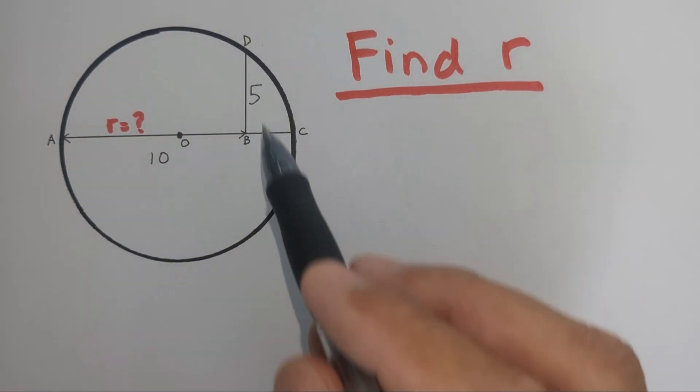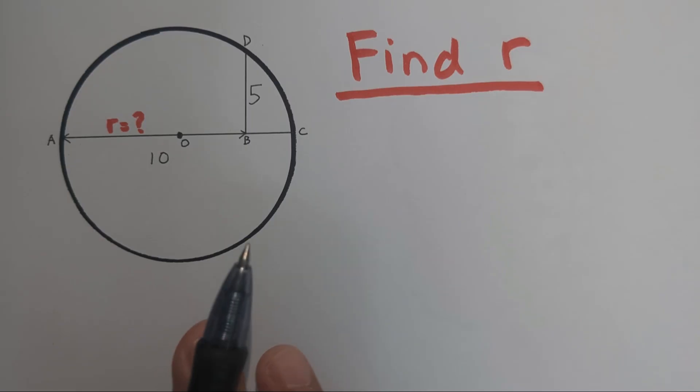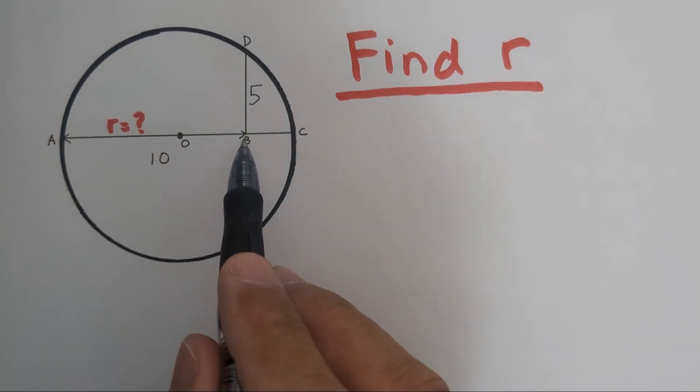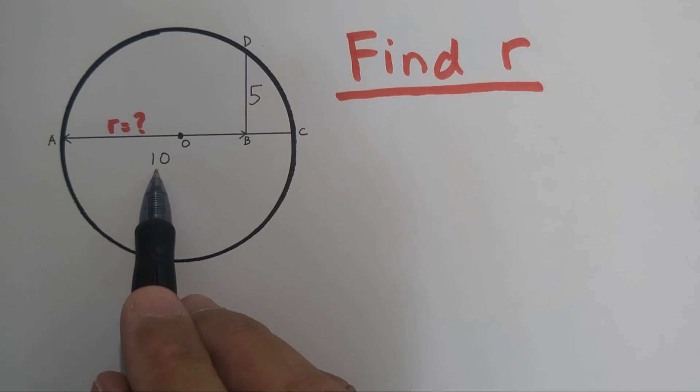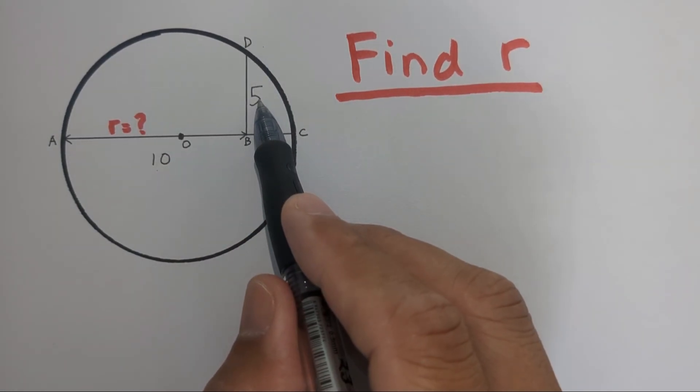We have a circle centered at O. We are given two numbers. From A to B, it is 10 units. From B to D, it is 5 units.